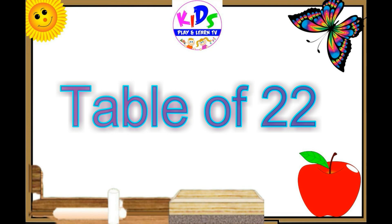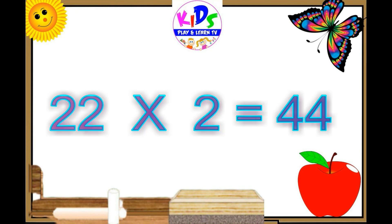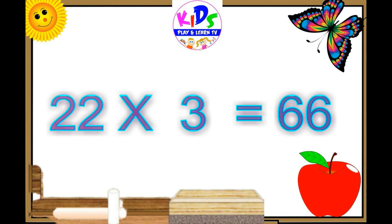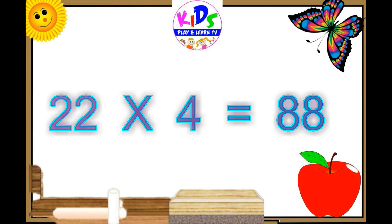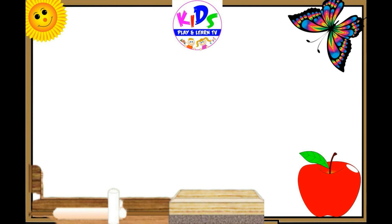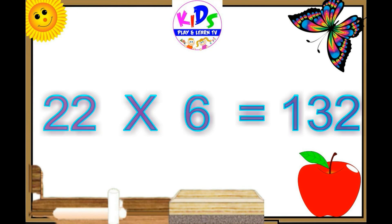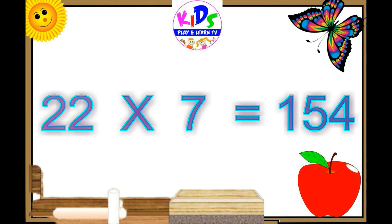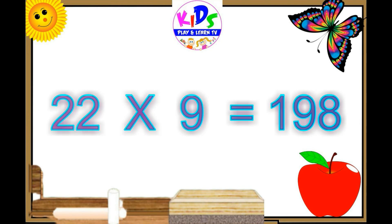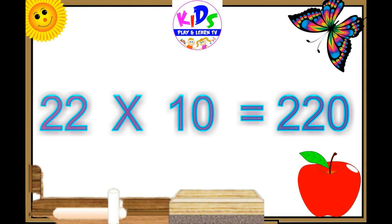We are going to learn now table of 22. 22 ones are 22, 22 twos are 44, 22 threes are 66, 22 fours are 88, 22 fives are 110, 22 sixes are 132, 22 sevens are 154, 22 eights are 176, 22 nines are 198, 22 tens are 220.